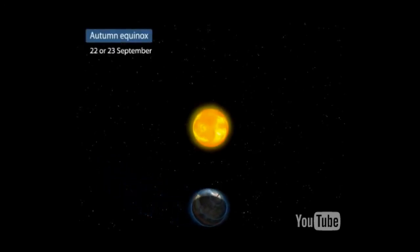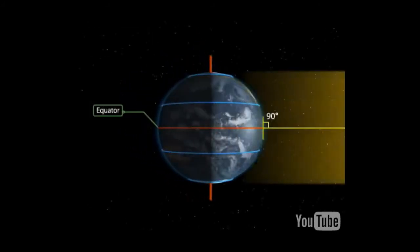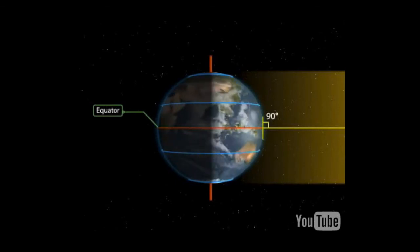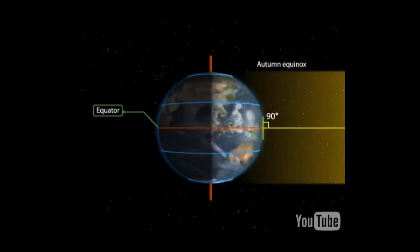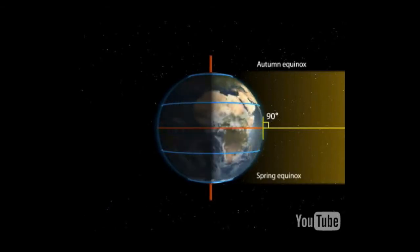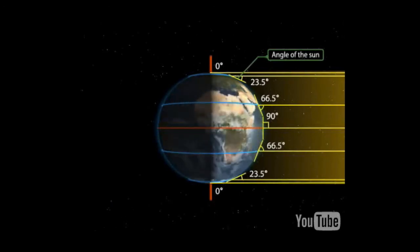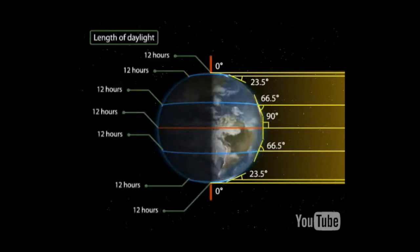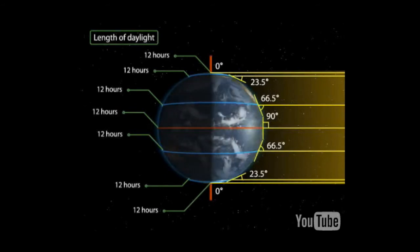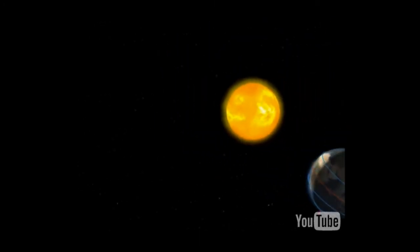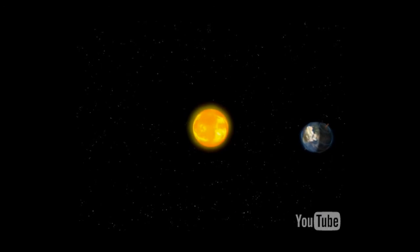At the autumn equinox on the 22nd or 23rd of September, the overhead sun is over the equator again, which receives the largest amount of solar radiation. The northern hemisphere is in the autumn equinox while the southern hemisphere is in the spring equinox. The angle of the sun decreases towards the poles. Both hemispheres receive a similar amount of solar radiation and the length of day and night is the same everywhere. After this day, days are shorter than nights in the northern hemisphere, and longer in the southern hemisphere.